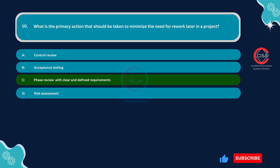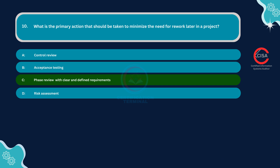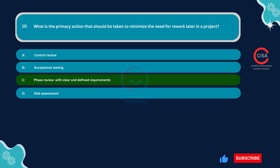Having clear and defined requirements from the beginning of a project sets the foundation for successful development. Unclear requirements can lead to misunderstandings, mismatched expectations, and ultimately rework to fix issues arising from those unclear requirements. Phase reviews that ensure requirements are clear and well-documented are a critical step in minimizing rework throughout the project life cycle.